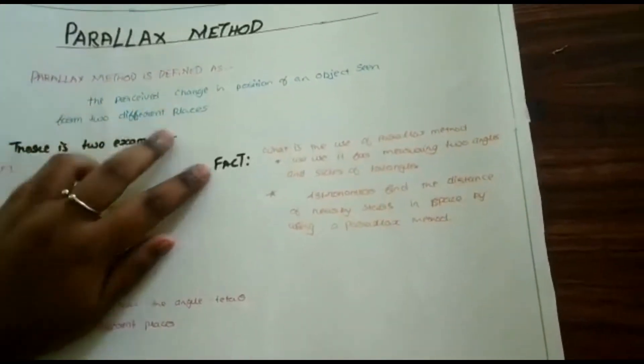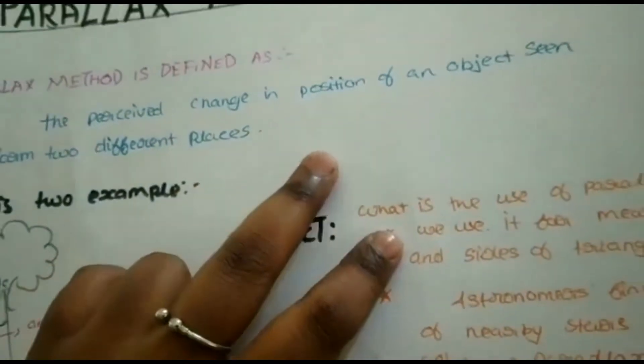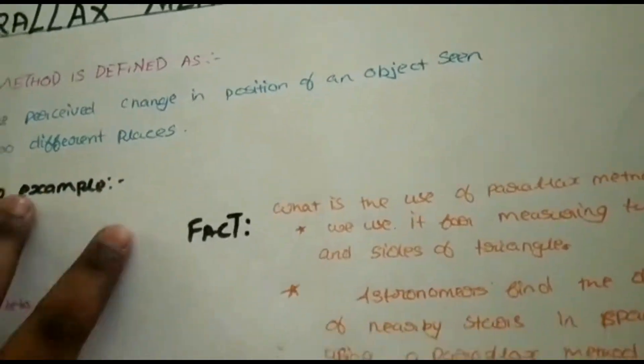Parallax method is defined as the perceived change in the position of an object seen from two different places.